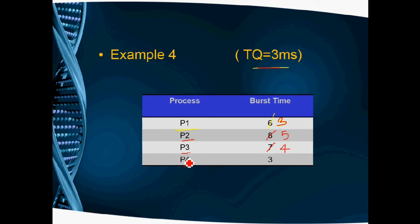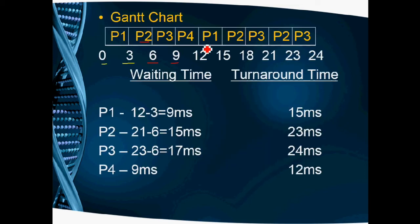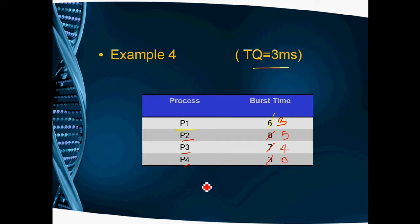Next we have P4. P4's burst time is 3 and the time quantum is 3, so P4 is fully executed. Remaining is 0. P4 starts at 9 milliseconds and executes for 3 milliseconds, finishing at 12 milliseconds. Since P4's remaining time is 0, after this round we go back to P1.